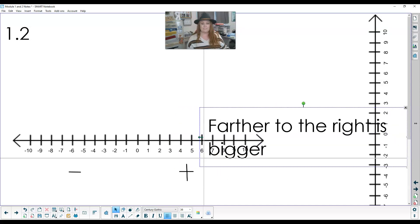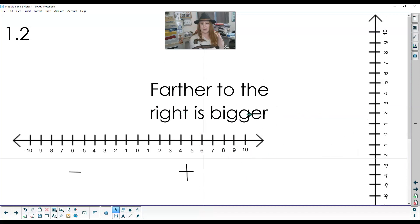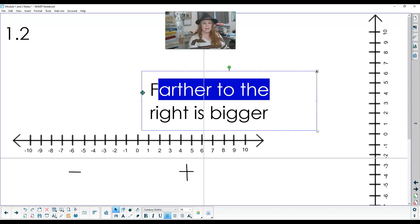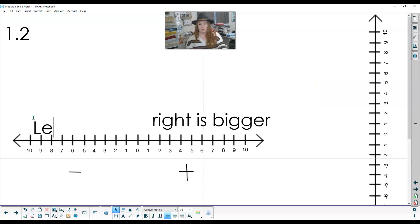So let's actually go ahead and write down that information here. So we always write, we go positive when I go to the right and negative to the left. And when I'm going to the right, farther to the right is bigger. So when I go to the right, right is bigger. Right is bigger. So that means when I go left is smaller. Left is smaller.